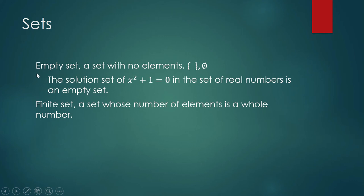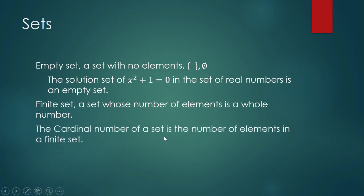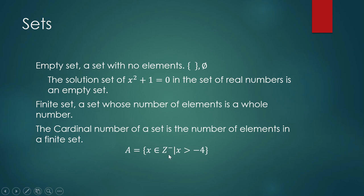What is a finite set? A finite set is a set whose number of elements is a whole number. That means the empty set is also a finite set, because it has zero elements and zero is a whole number. The cardinal number of a set is the number of elements in a finite set — remember that term. For example, let set A equal the set of negative integers greater than negative four. Some other books use Z with a negative subscript for the set of negative integers.